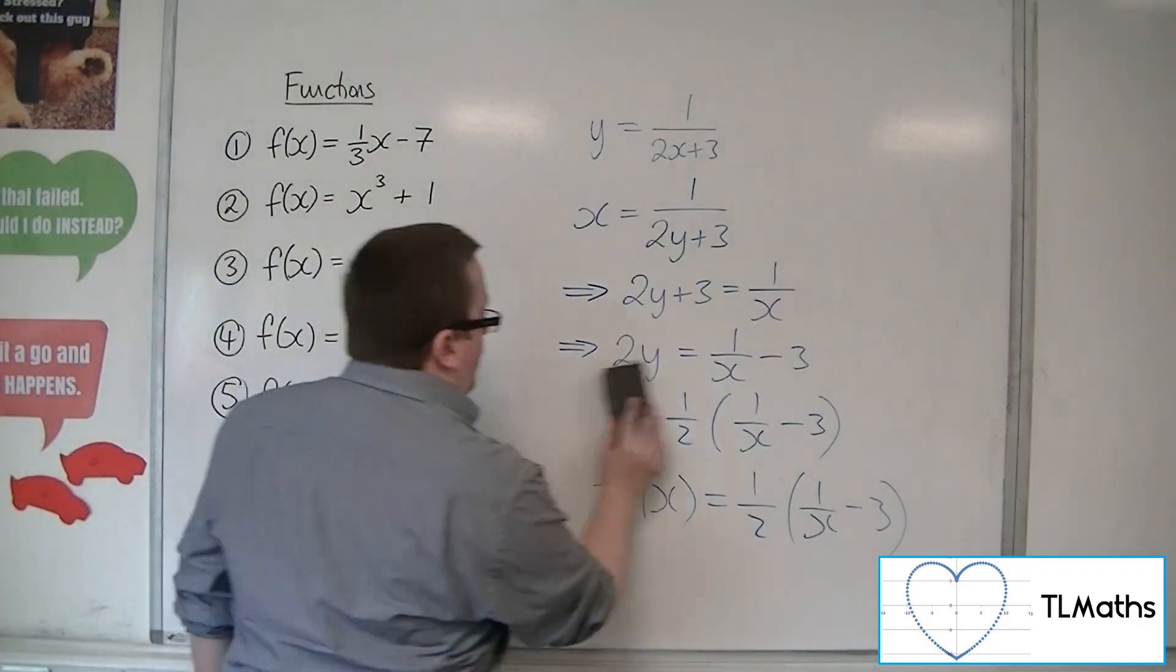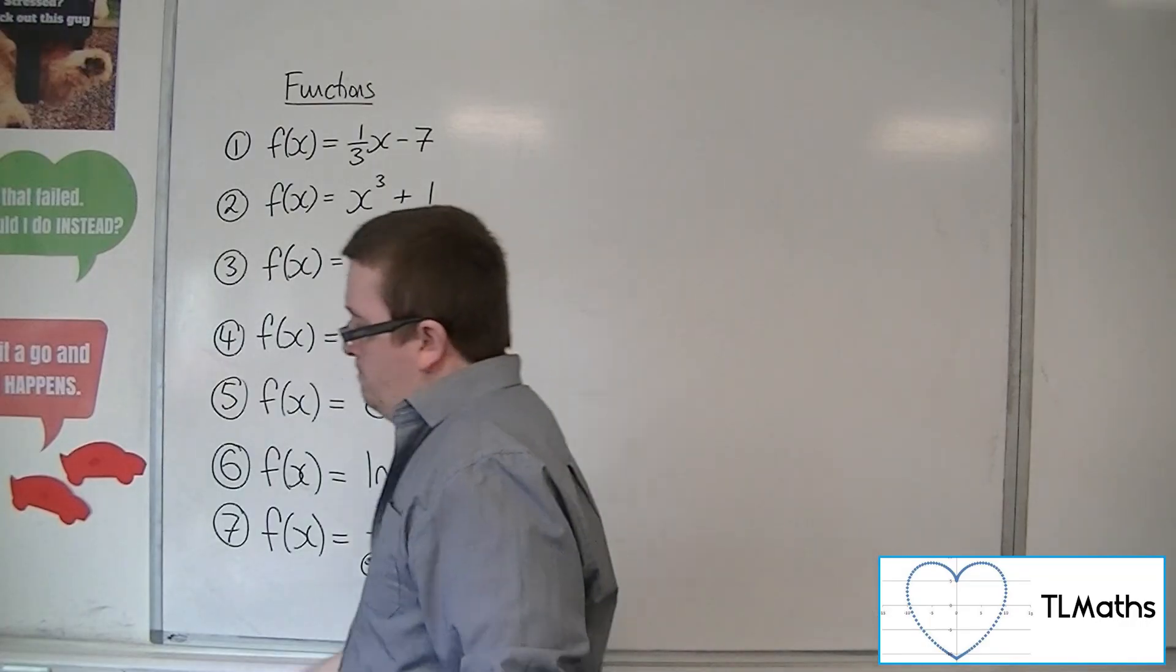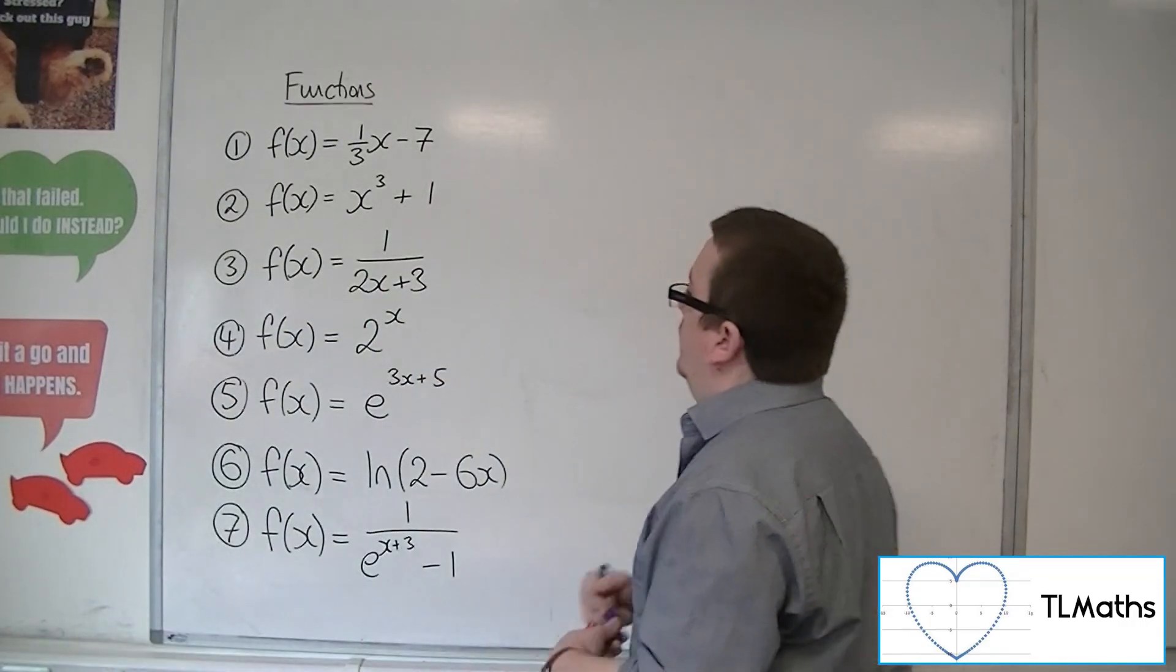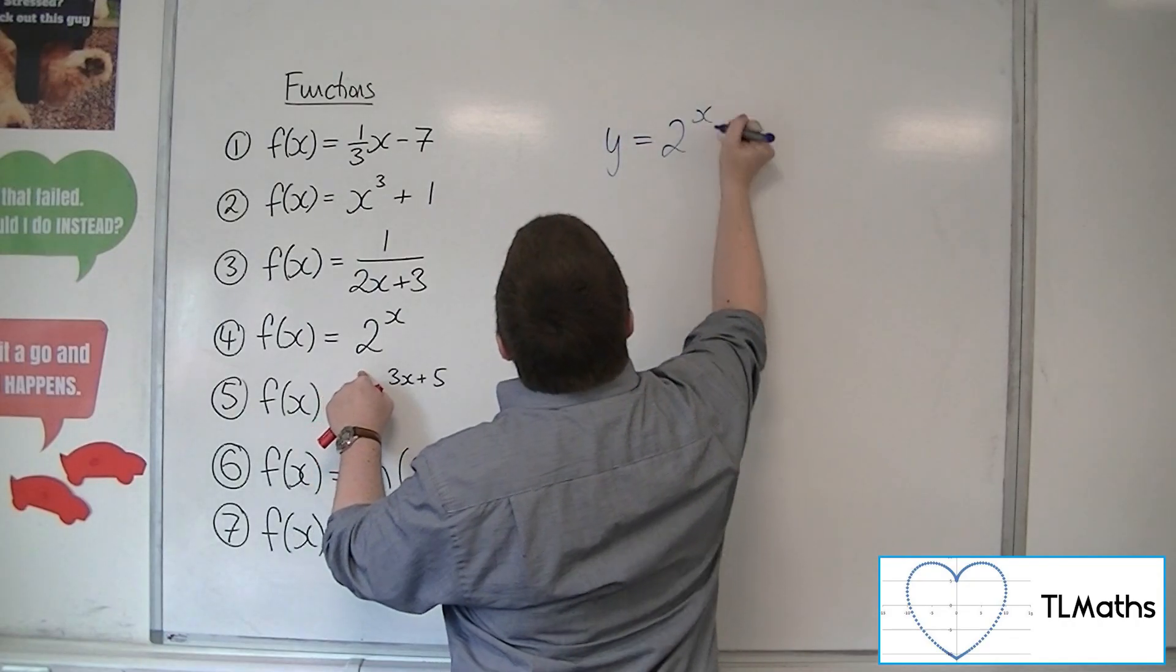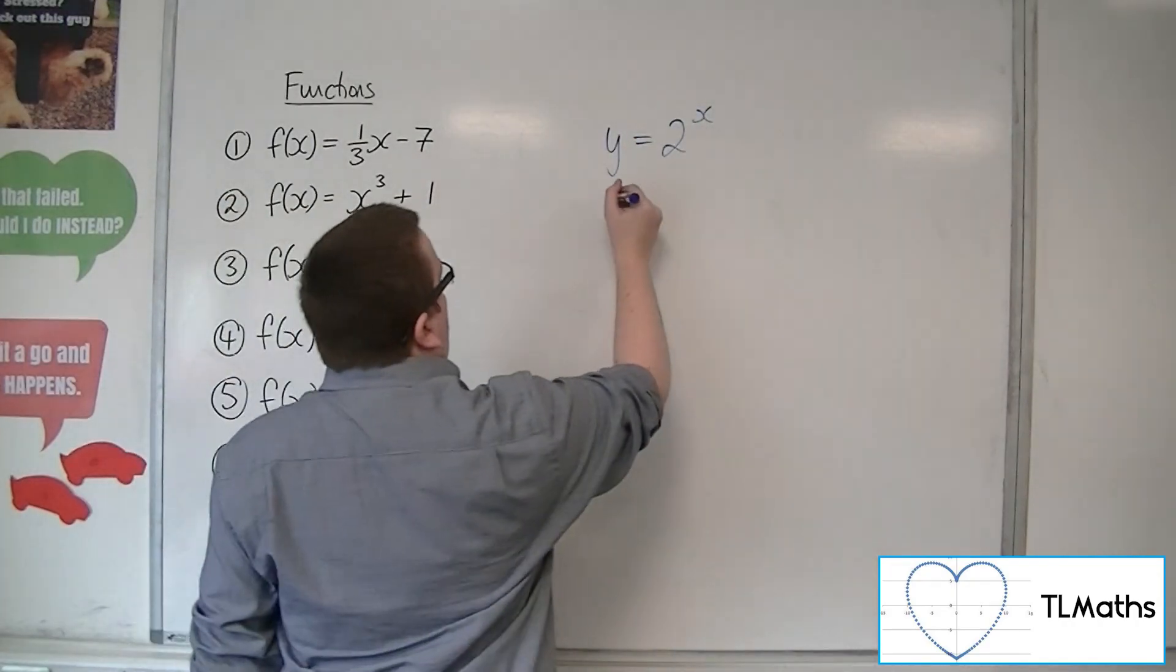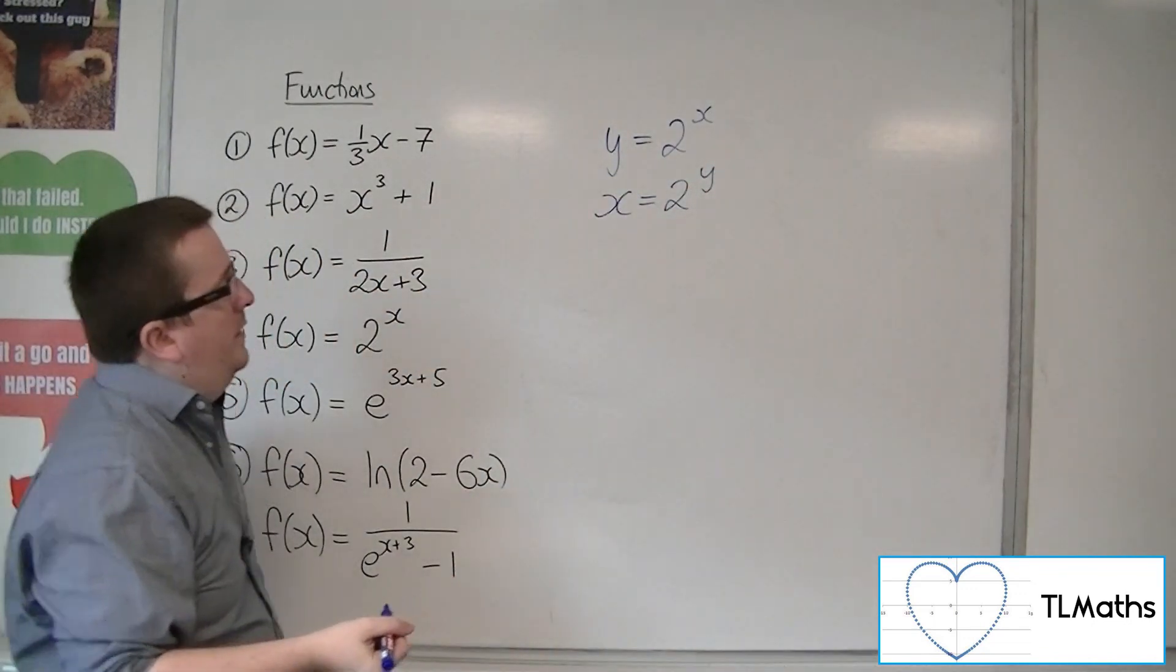So number 4, f(x) = 2ˣ. So first of all, y = 2ˣ. Now, I'm going to replace the x and the y. Oh, sorry. Swap the x and the y, like so.